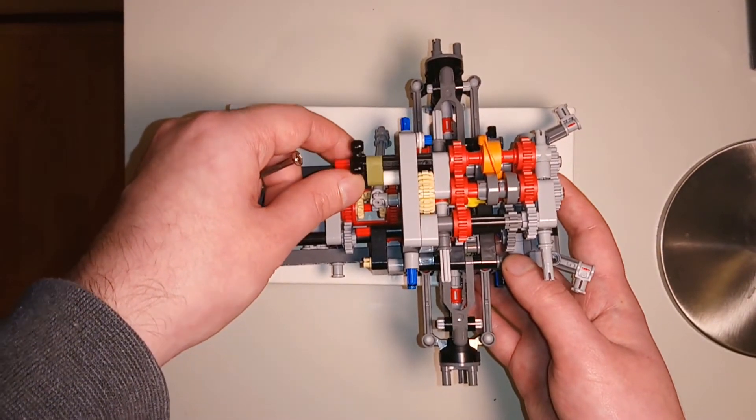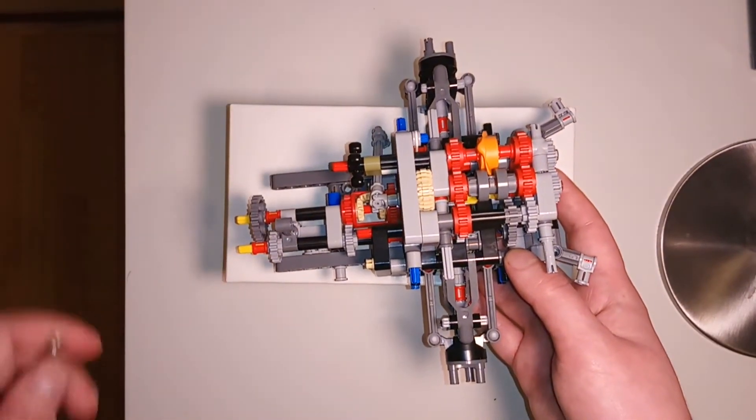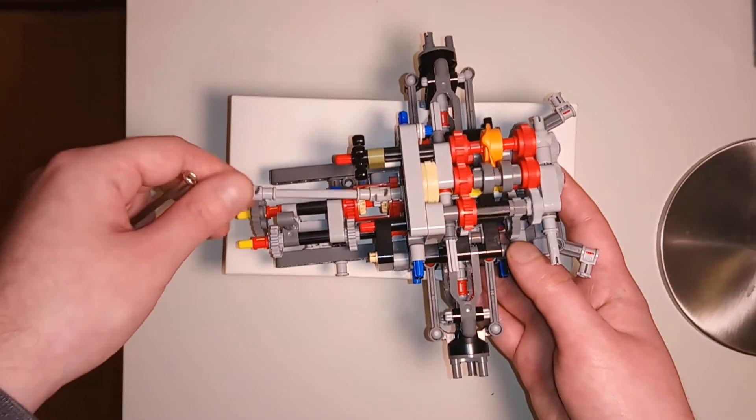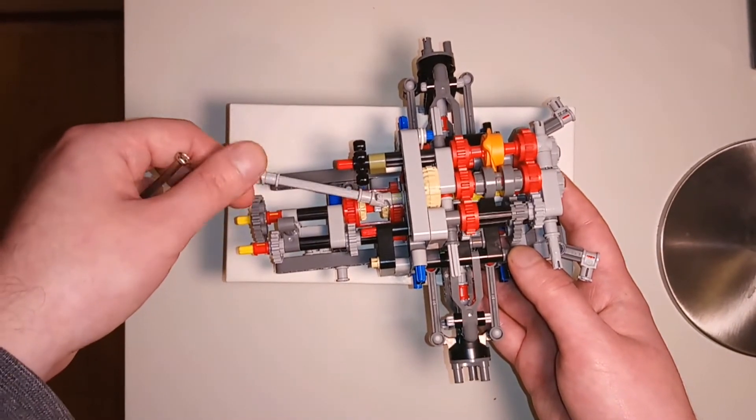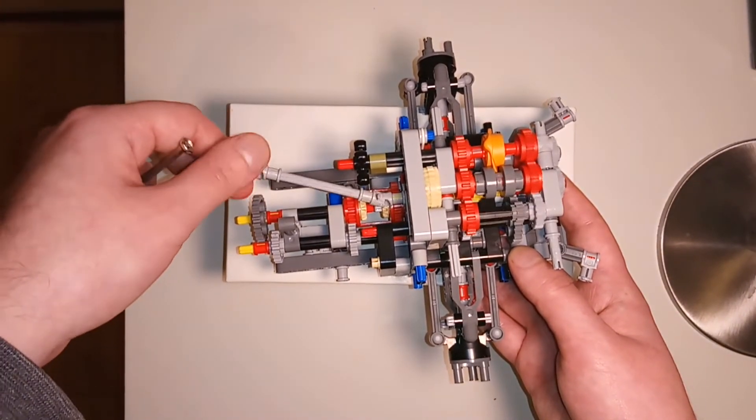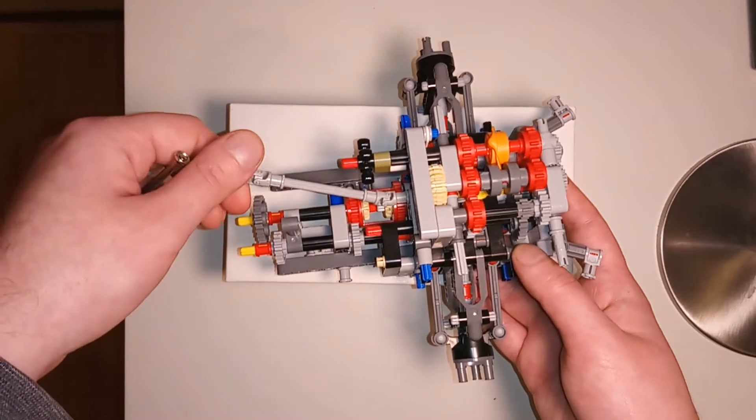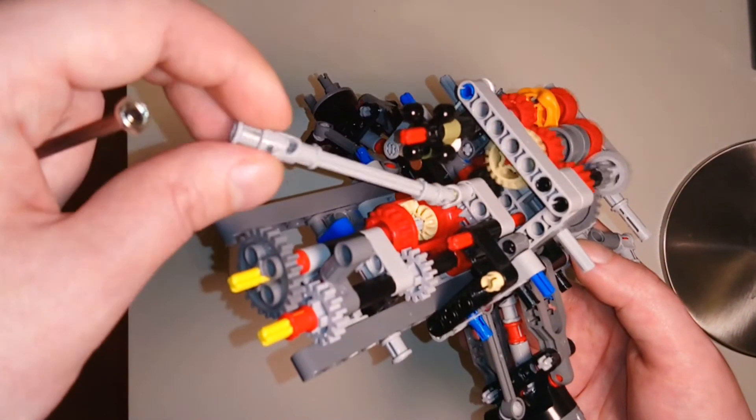Next, let's select second gear. Though it is still fairly easy to turn the input shaft, there is clearly a little bit more resistance. The output shaft also rotates a little bit faster.